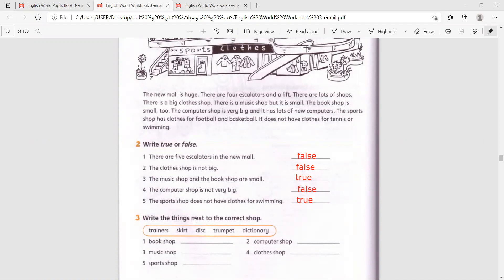Write the things next to the correct shop. Bookshop, dictionary. It is a book with all the meanings of words. Number two, computer shop. Disc.